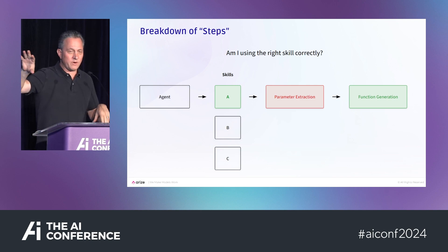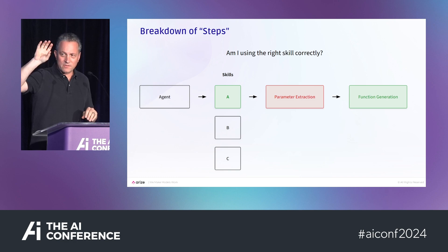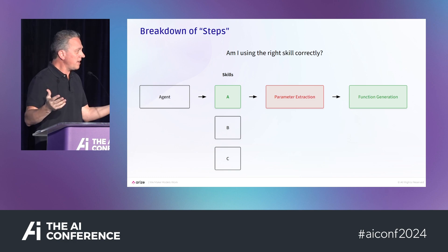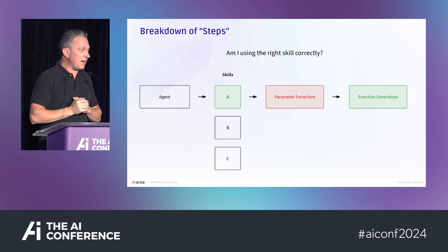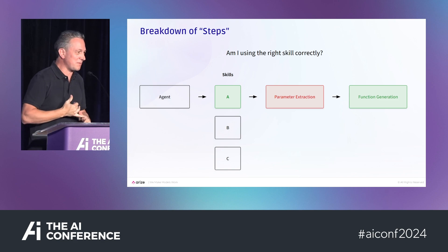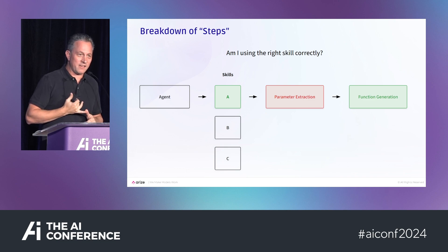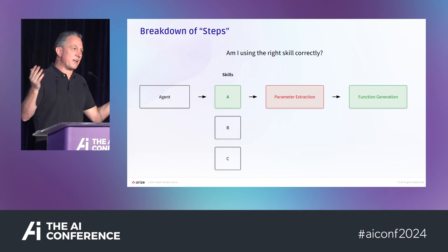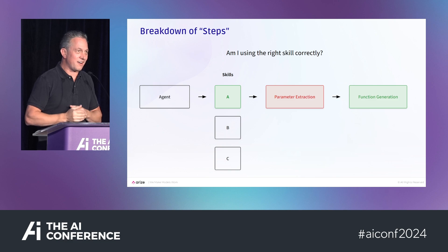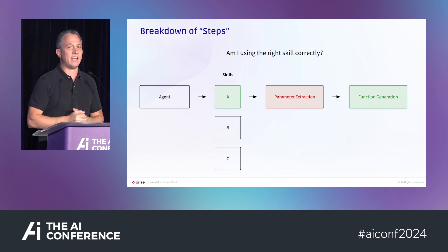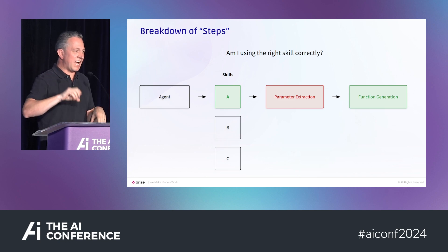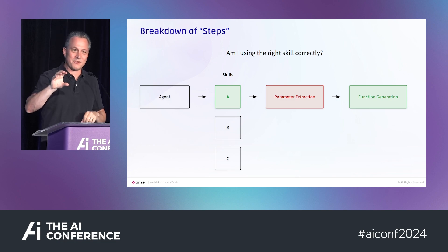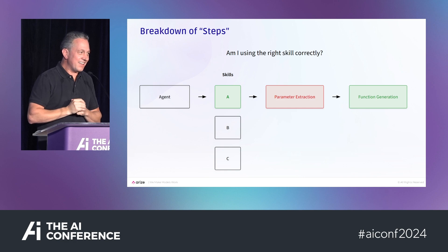At the router stage, you're evaluating what function to call and what parameters are extracted — those are the two things going down to the next stage. Evaluations are a fancy word for understanding performance or results of what you've built. There are two ways: using an LLM to understand whether your LLM returned the right thing — as crazy as it sounds, it's actually pretty useful — and code-driven evals where you write Python.